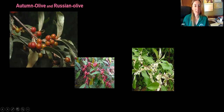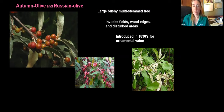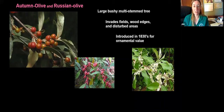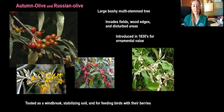The next species is both autumn olive and Russian olive — multi-stemmed trees with very grayish, silvery-looking leaves. They can invade fields or woodland edges, really anywhere that's been disturbed. They were introduced in the 1830s for their ornamental value. You can see the berries that form along the center of each stem. Autumn olive is the most common in our area, with very pale yellow flowers. It was touted as a windbreak for stabilizing soil and for feeding birds with its berries, but it can easily outcompete our native plants and create monocultures.